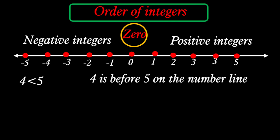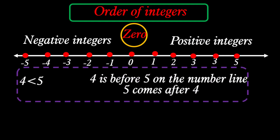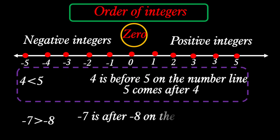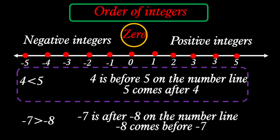Now let's look at the order of integers. All integers are ordered from left to right, from least to greatest. For example, 4 is less than 5, so 4 comes before 5 on the number line. We can also say that 5 comes after 4. For example, negative 7 is greater than negative 8. We can say that negative 7 is after negative 8 on the number line, or negative 8 comes before negative 7.